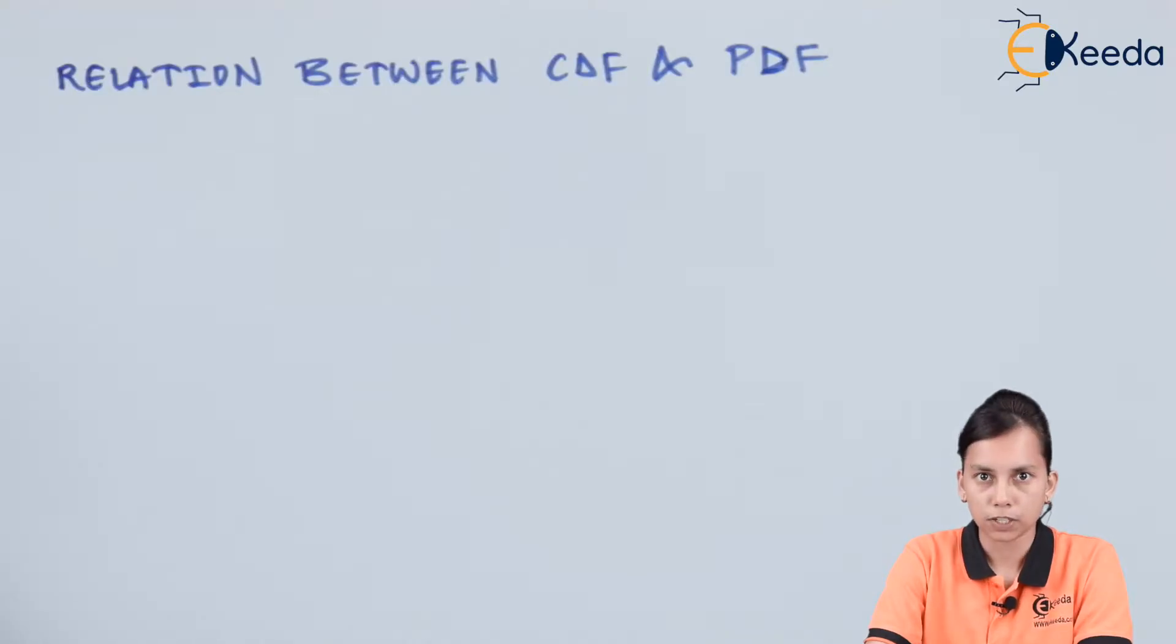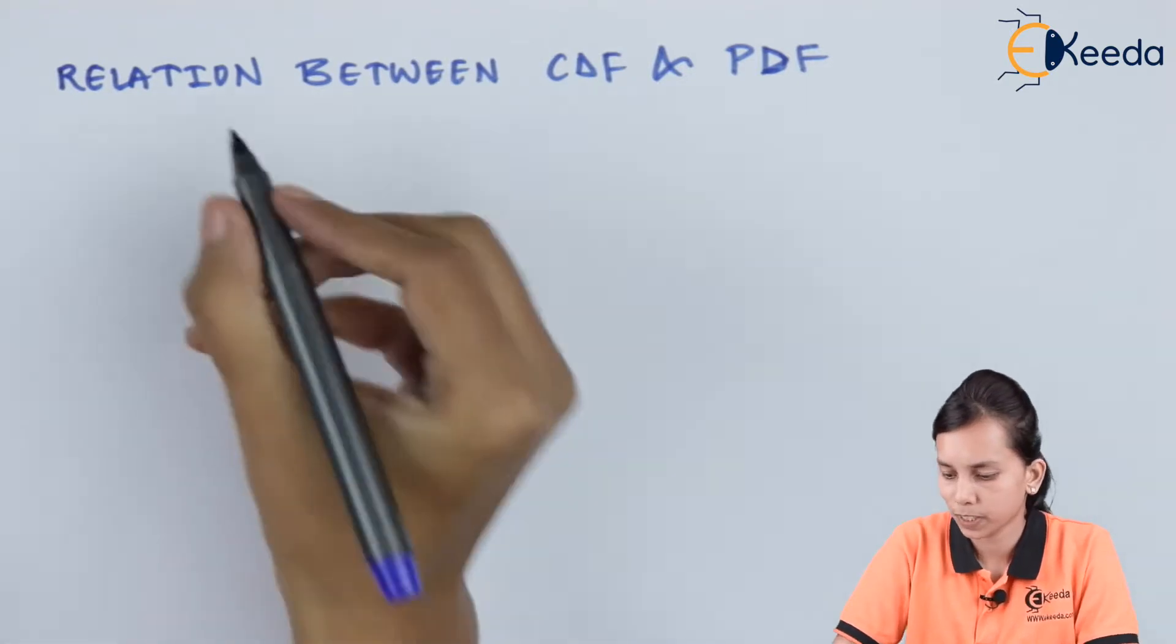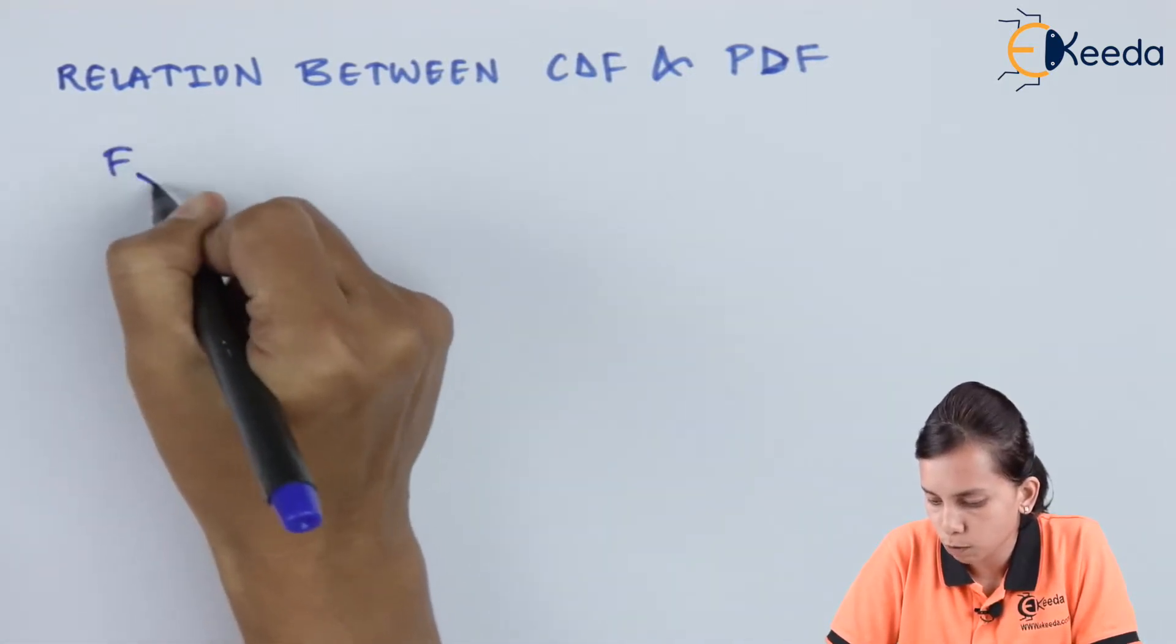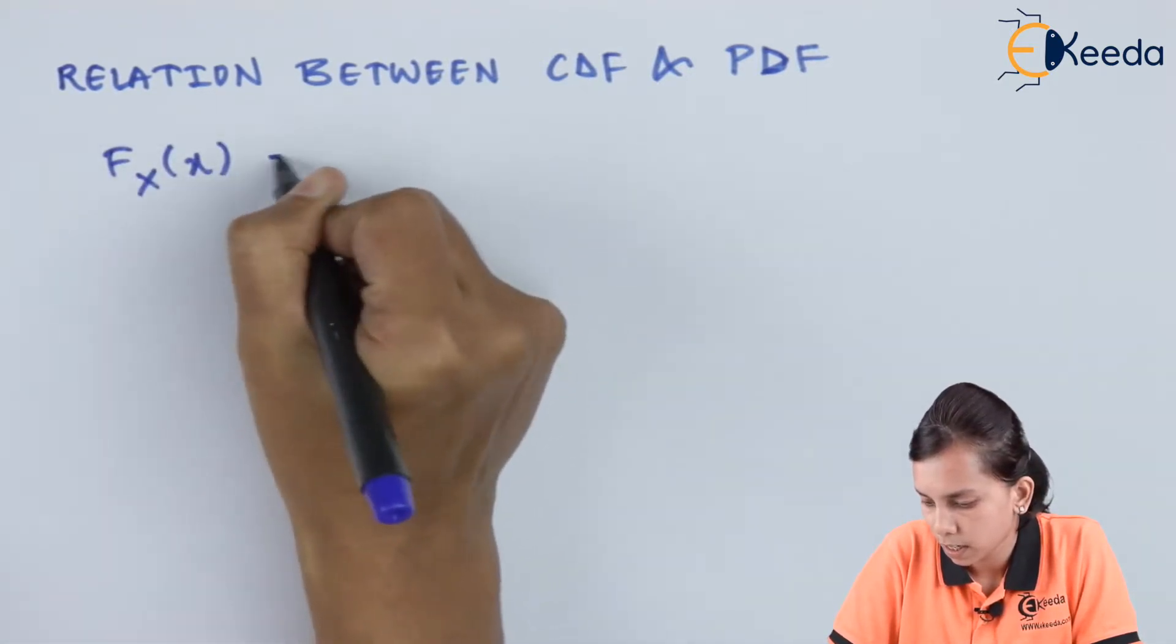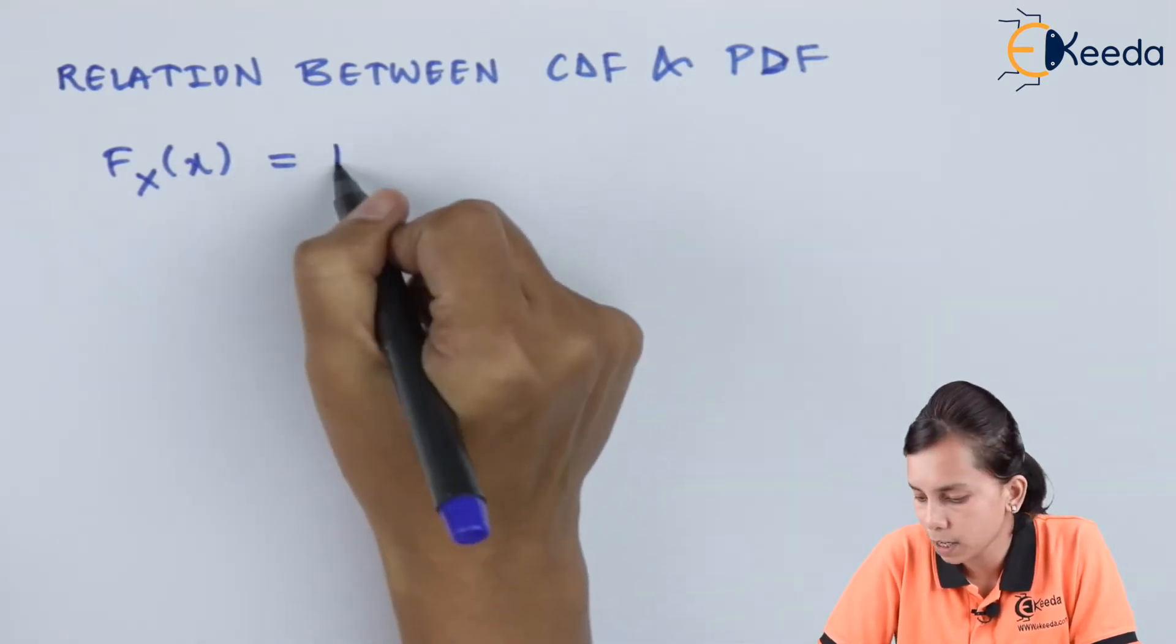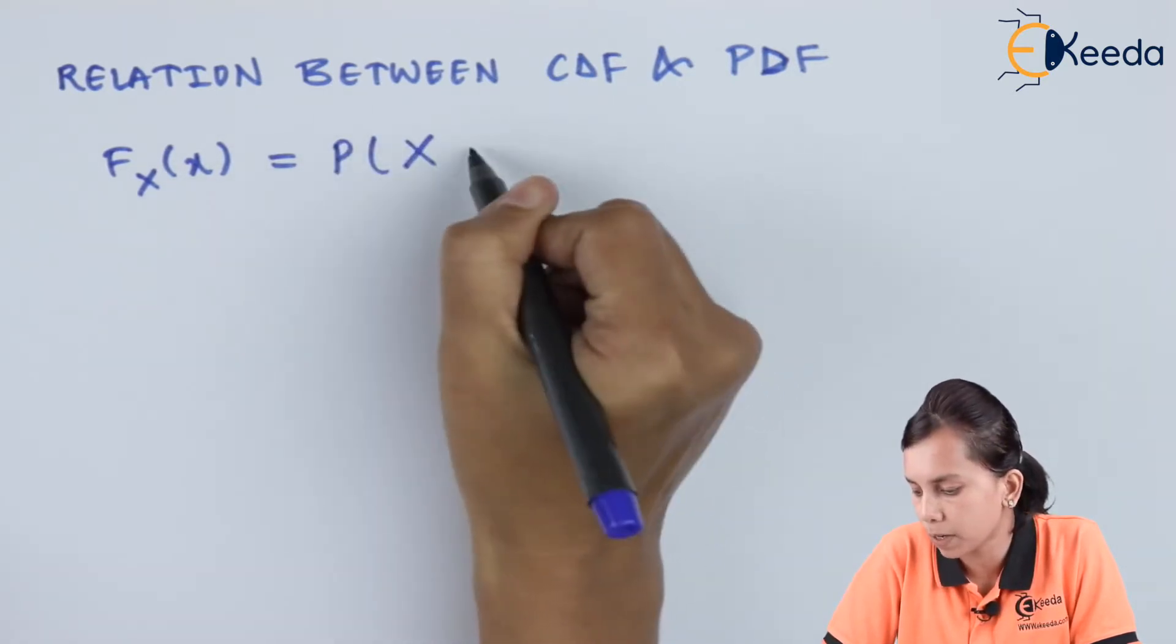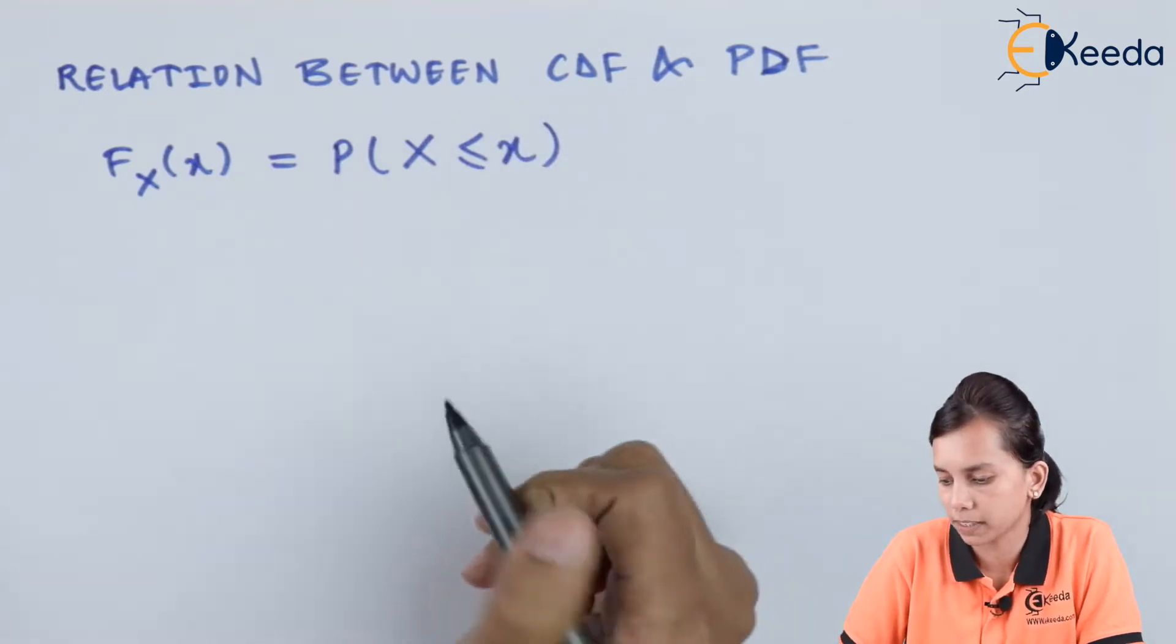Cumulative distribution function is defined like this: F_X(x), it is the probability when random variable is less than or equal to small x.